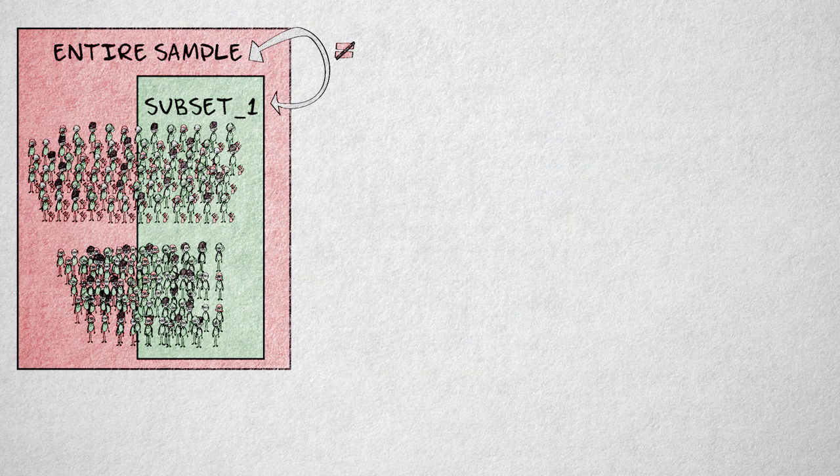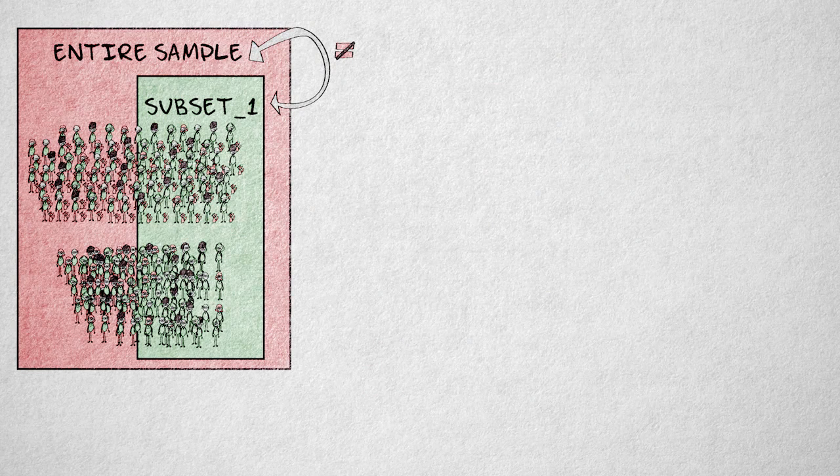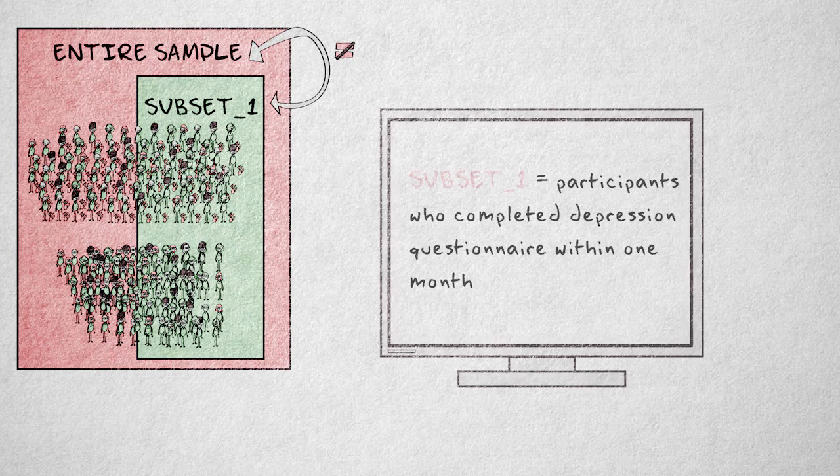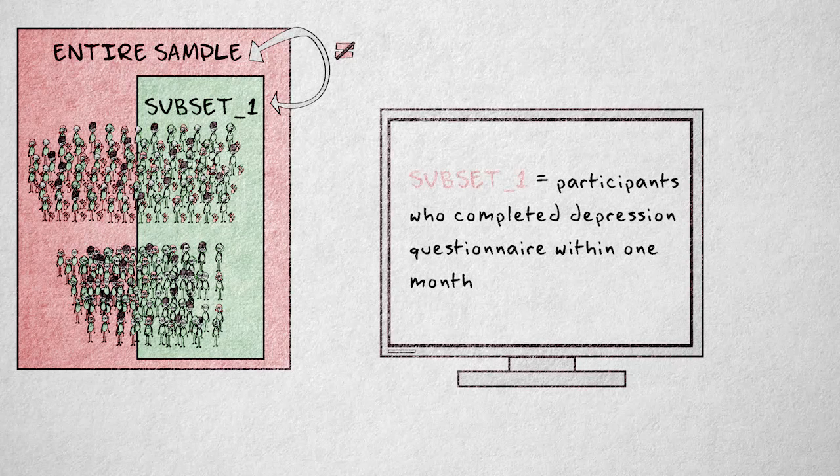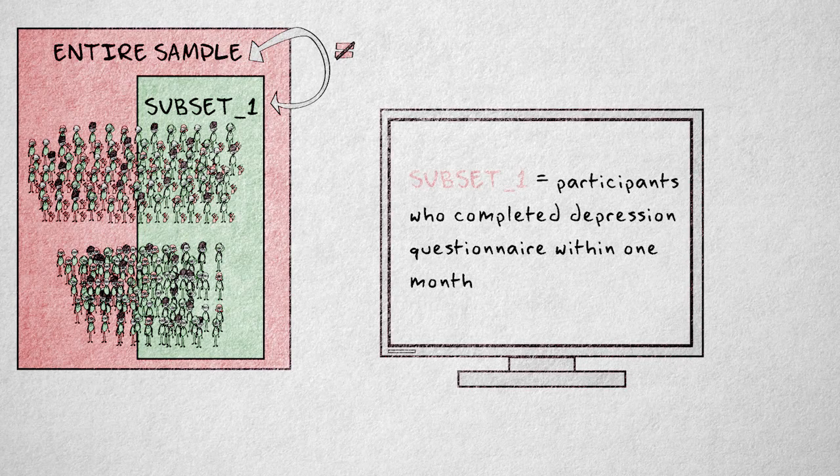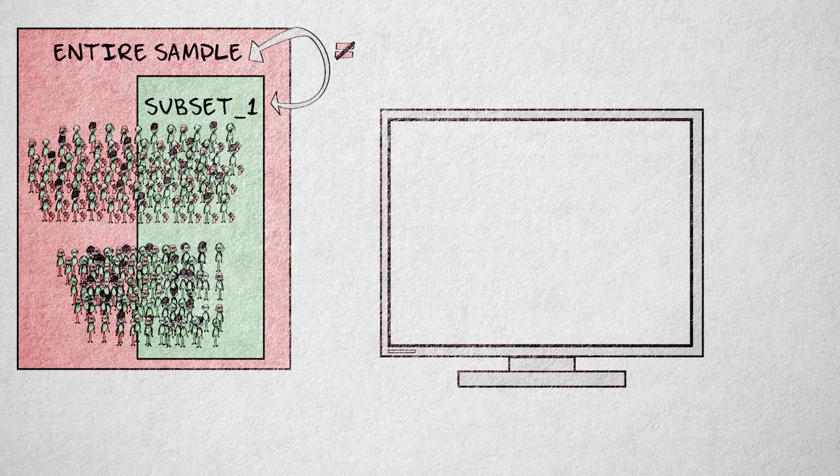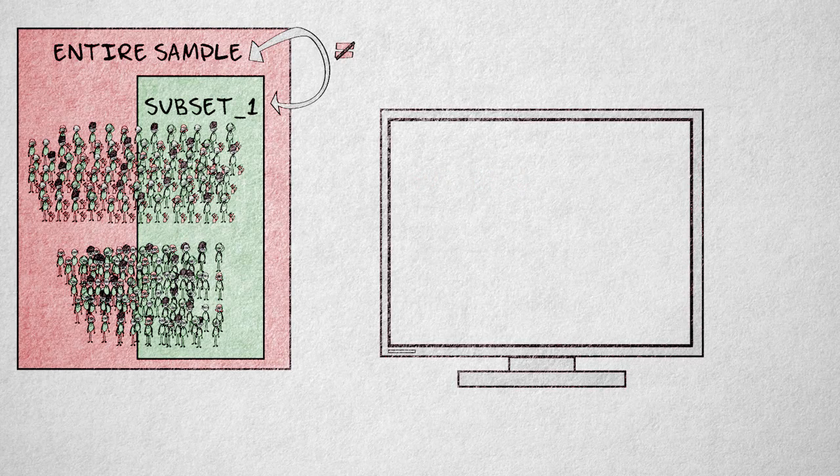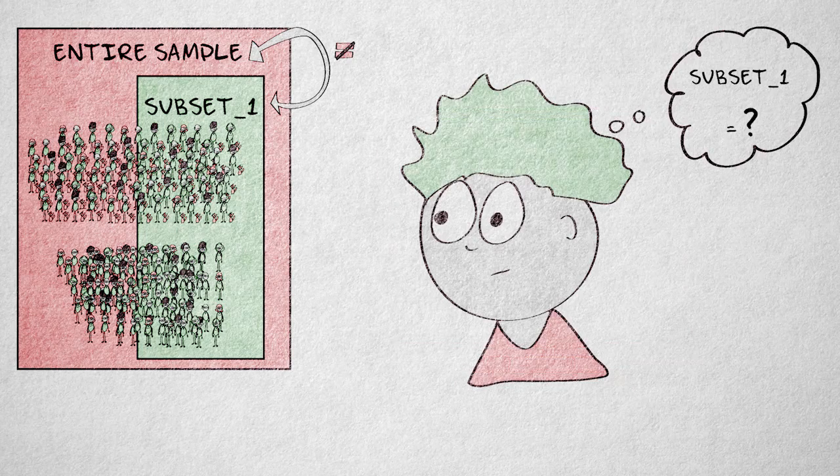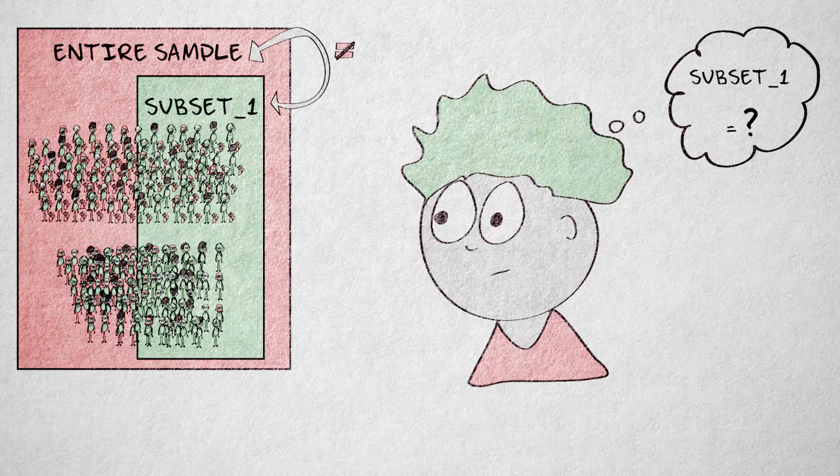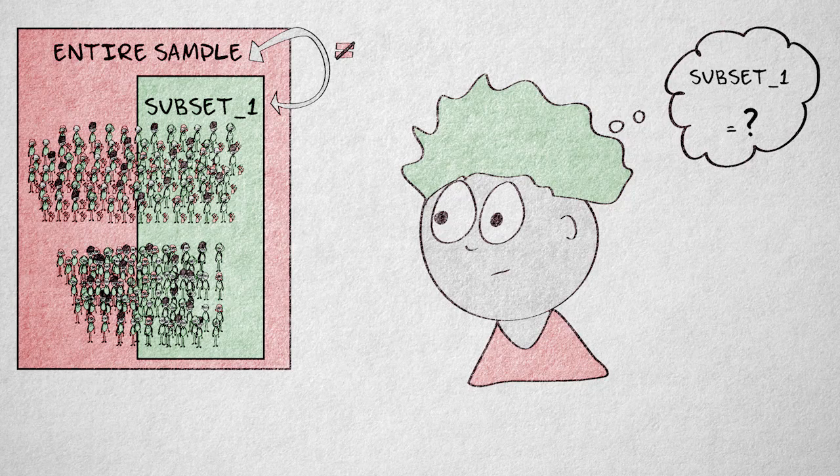Otherwise we might not be able to reproduce processed data that are used to formulate the final conclusions. For example, when I select a subset of my sample, say only people who completed the depression questionnaire within a month, then my results might be different from results obtained from the entire sample. If I don't record my selection criteria, then in a year from now, I will probably have forgotten the exact criteria, and will not be able to reproduce my own results.